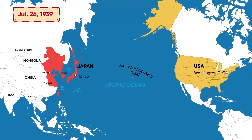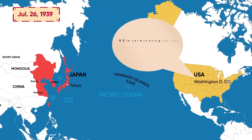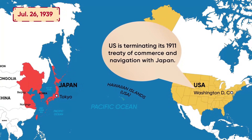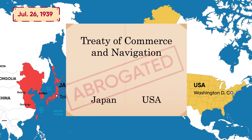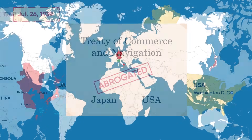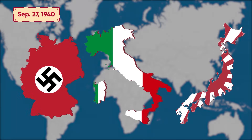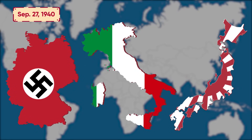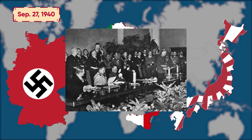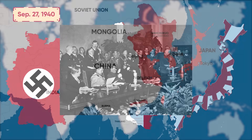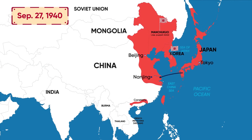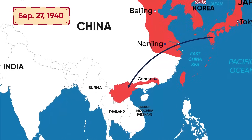On July 26, 1939, the US gave formal notice for termination of the 1911 Treaty of Commerce and Navigation with Japan, which was officially abrogated later. On September 27, 1940, Japan joined the Axis powers, formed through its alliance with Germany and Italy through the signing of the Tripartite Pact in Berlin, and then managed to enter parts of French Indochina.